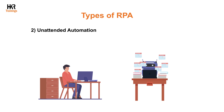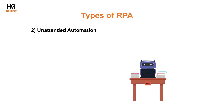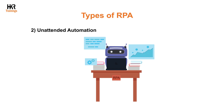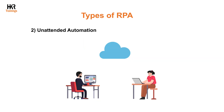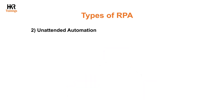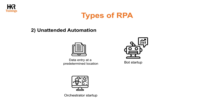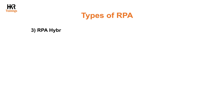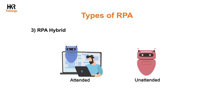Second, unattended automation — one way to lessen the workload of back office staff members is through unattended automation. Data processing operations are carried out in the background by these bots, similar to batch processes in the cloud. The following events can initiate unattended automation: data entry at a predetermined location, bot startup, orchestrator startup, and predetermined intervals.